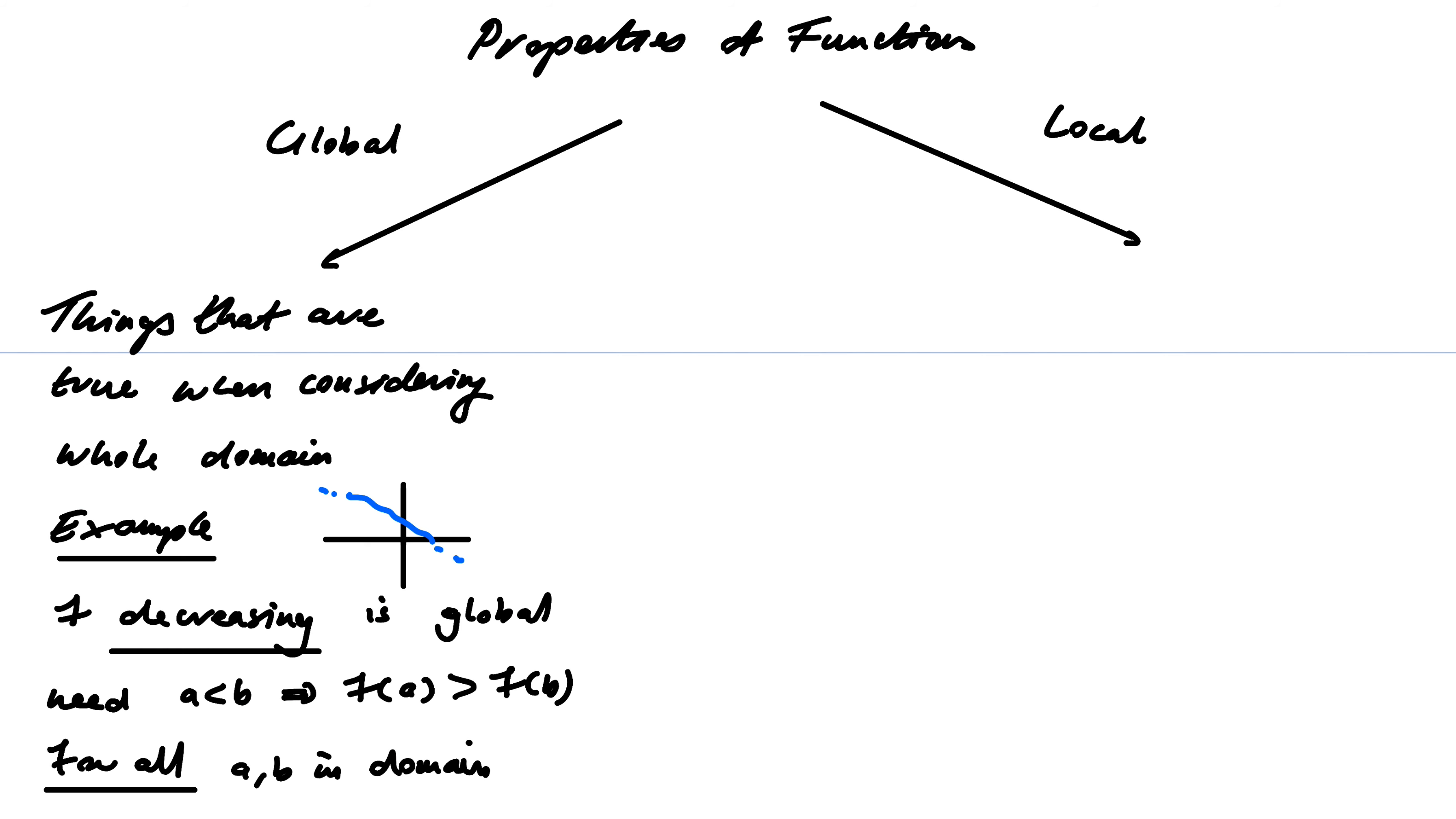Now, a more refined and probably more difficult idea is the idea of a local property. And a local property is something that's only true when I am looking up close to a point on a graph, essentially, or a function. So these are things that are true when on some restriction of the domain.